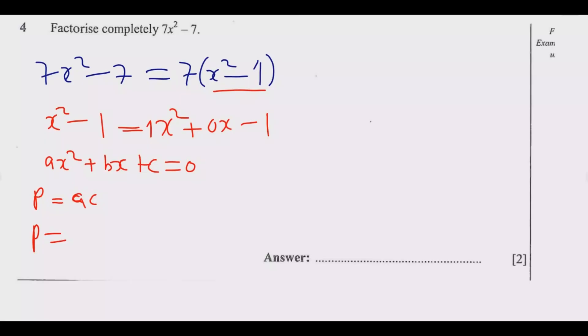Meaning the product is equal to negative 1 times positive 1, which is negative 1. Then the sum is equal to the coefficient of x, which in this case is 0. So we are looking for two numbers such that when we multiply them they'll give us negative 1, when we sum them they'll give us 0. In this case, we're going to have negative 1 and positive 1.